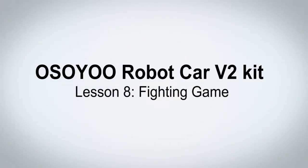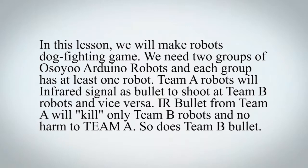Welcome to the 8th lesson of Osio Robot Car V2 Kit. In this lesson, we will make a robots dogfighting game. We need 2 groups of Osio Arduino robots, and each group has at least one robot. Team A robots will use infrared signal as a bullet to shoot at Team B robots and vice versa. IR bullets from Team A will kill only Team B robots and cause no harm to Team A, and so does Team B's bullet.